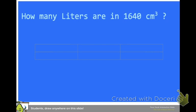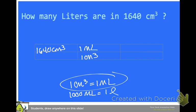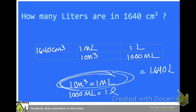How many liters are in 1,640 cubic centimeters? Remember that 1 cubic centimeter equals 1 milliliter, and if you have 1,000 milliliters you have 1 liter. Start with 1,640 cm³, convert to mL (1 cm³ = 1 mL), then convert to liters (1,000 mL = 1 L), and you end up with 1.640 liters. If you already see this relationship in your head and don't need to do the intermediate step, that's fine too.